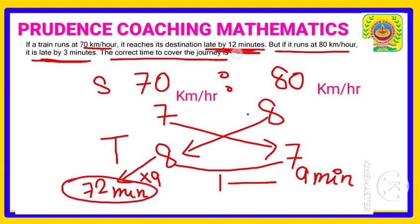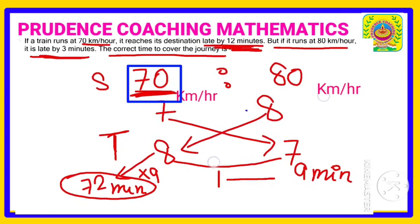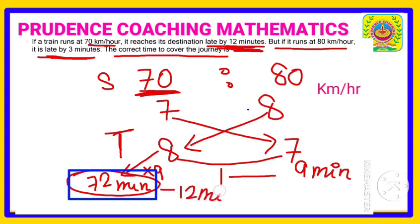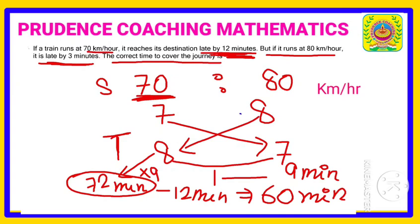The 72 minutes is the time taken by the train traveling at 70 km/h, but it is 12 minutes late. That means it took 12 minutes more than the actual time. So 72 minus 12 equals 60 minutes. The correct time to cover the journey is 60 minutes, that is one hour.